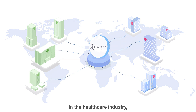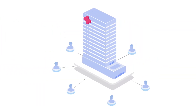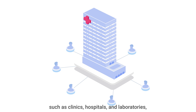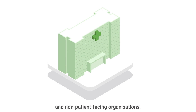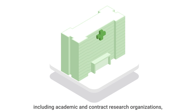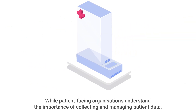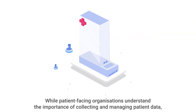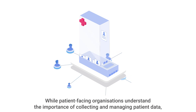In the healthcare industry, there are two primary types of organisations: patient-facing organisations, such as clinics, hospitals and laboratories, and non-patient-facing organisations, including academic and contract research organisations, as well as pharmaceutical companies.